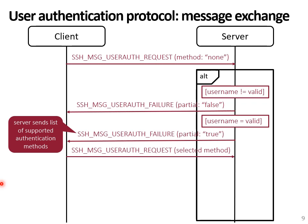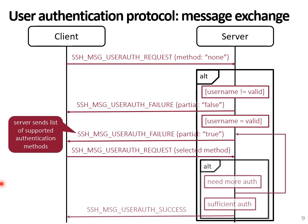The client will then use one of these methods and send another request with the method they selected. If successful but the server requires more authentication, another partial failure message is sent and the client can select another method. This supports multi-factor authentication. Once the server is satisfied and the user has authenticated with enough methods, the server sends a user authentication success message.